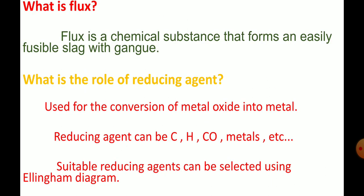What is flux? Flux is a chemical substance that forms an easily fusible slag with gangue. We already know what gangue is — the impurities present in the ore are called gangue. In order to remove the gangue particles, flux is added. When flux is added, it combines with the gangue present in the ore, and these two are collectively removed as slag. That is why flux is added in the smelting process.